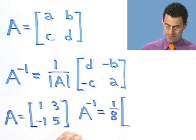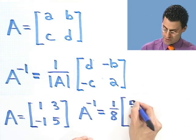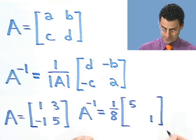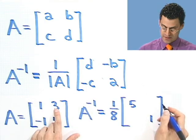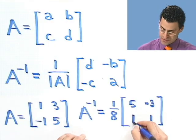And then I multiply that by what matrix? Well, I flip these people. So I have a 5 and a 1 here. And then I put negative signs in front of these people. So I have a negative 3. And then I have a negative negative 1, which becomes a positive 1.